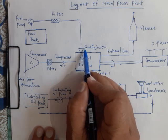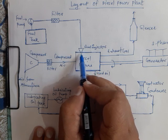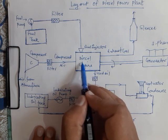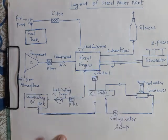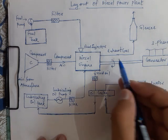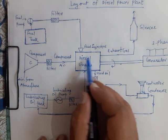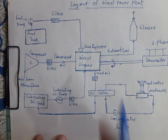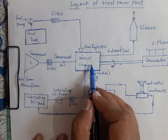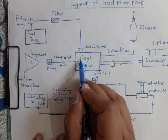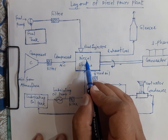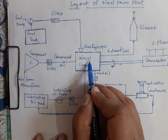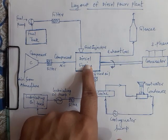Inside the fuel injector, the fuel is atomized and vaporized, then sprayed into the engine. Since there is already hot compressed air inside the engine, combustion of the fuel takes place. Through the connecting rod and crank, the reciprocating motion of the piston is converted into the rotary motion of the crankshaft — this is the same diesel engine mechanism we have already studied.